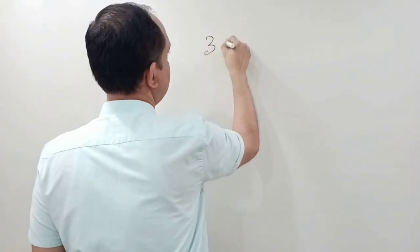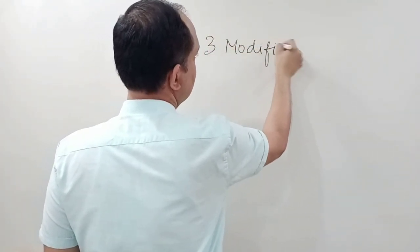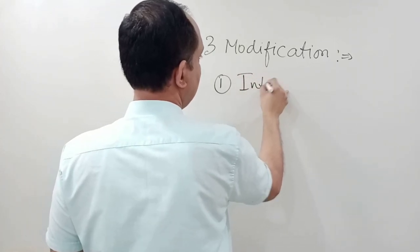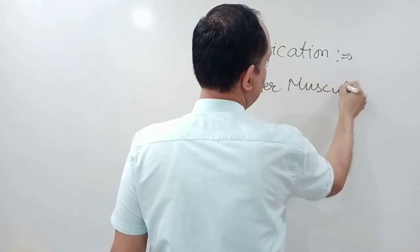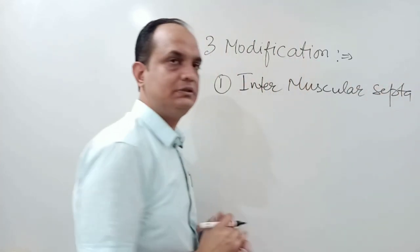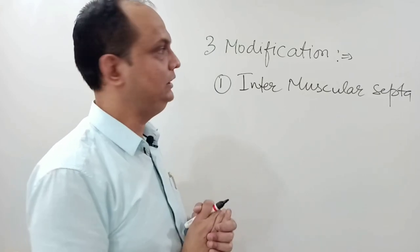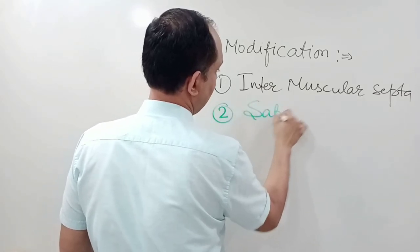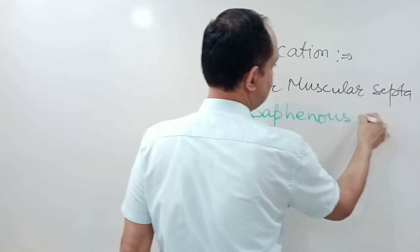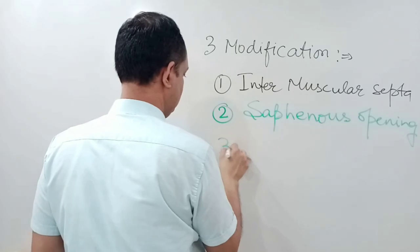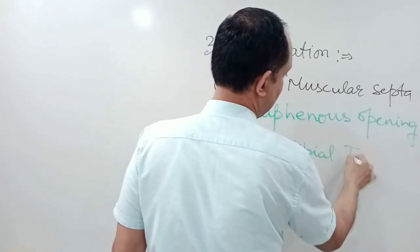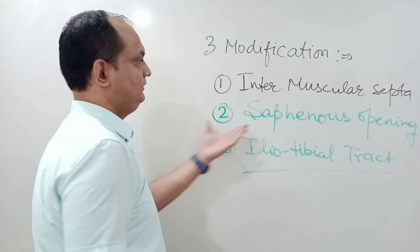There are three modifications of the deep fascia of the thigh. The first modification is the intermuscular septa, which divide the circumference of the deep fascia into three compartments. The second is the saphenous opening. The third is the iliotibial tract.